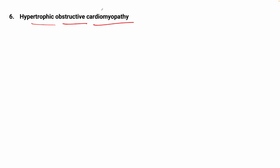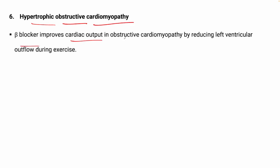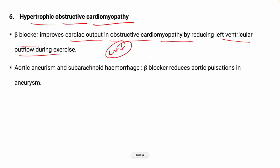Next is hypertrophic obstructive cardiomyopathy. Beta blockers improve cardiac output in obstructive cardiomyopathy by reducing left ventricular outflow obstruction during exercise. In aortic aneurysms and subarachnoid hemorrhage — which is bleeding in the space between the brain and the tissue covering the brain — beta blockers reduce aortic pulsations. These pulsations can continue in the abdominal areas in aneurysm cases.